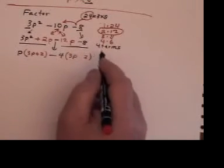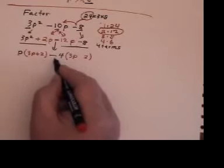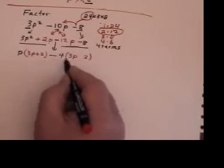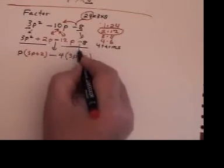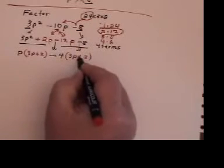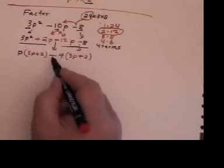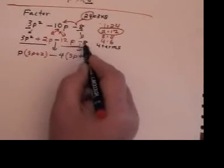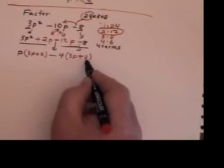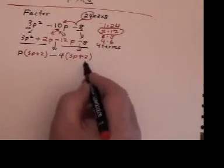So what I'm left with is a 3p from here and a 2 from here. Now here's something you have to watch for. Whenever you factor a negative sign out in front of a bracket, this sign will change. And it makes sense. Negative 4 divided into negative 8 goes positive 2.